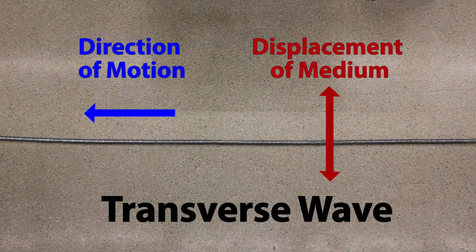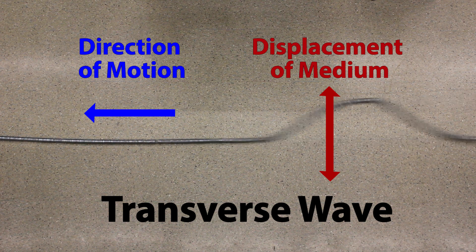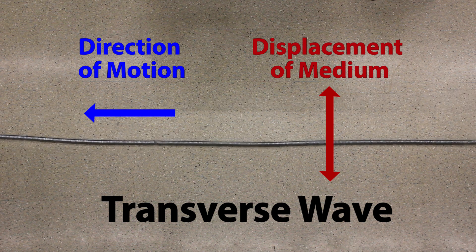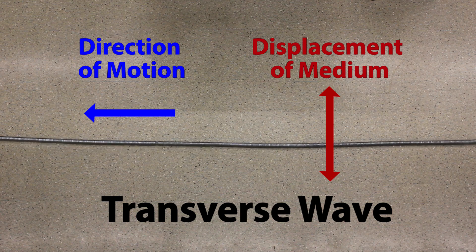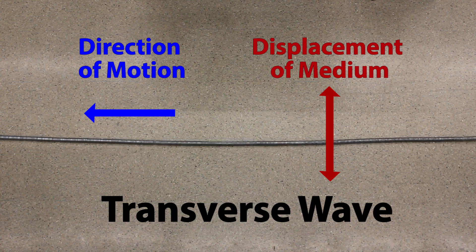Now we need to talk about different types of waves. We have a spring and we're going to send a wave along it. What you can see is that the displacement of the medium is in a direction perpendicular to the motion of the wave — the wave moved from right to left while the medium was displaced upwards and back down. This type of wave is called a transverse wave, where the displacement is perpendicular to the direction of wave motion.